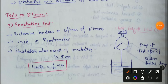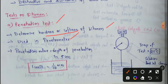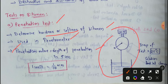First, we will discuss the penetration test. The penetration test is used to determine the hardness or softness of bitumen, using a penetrometer. The penetration value is measured as the depth of penetration in 5 seconds.